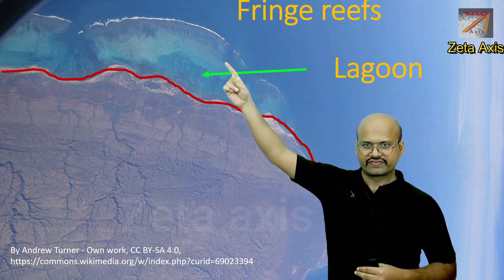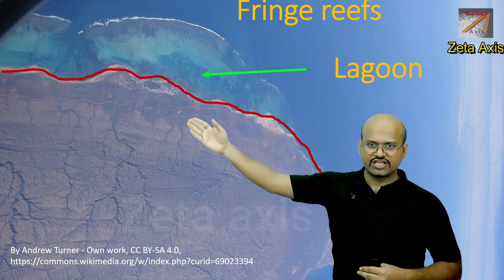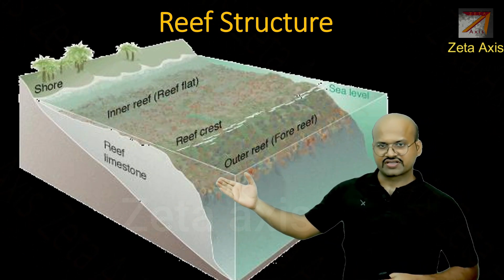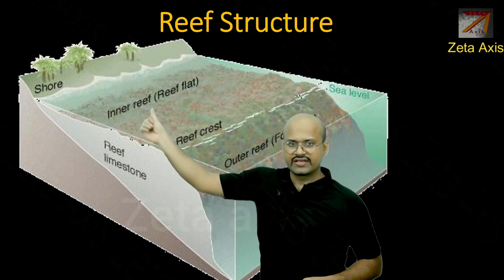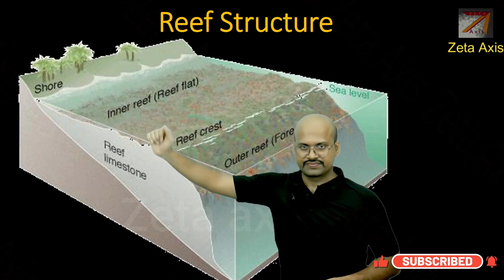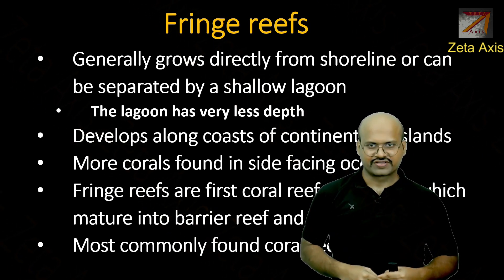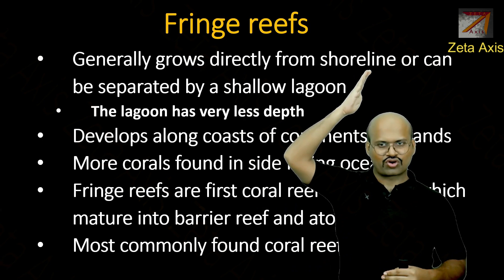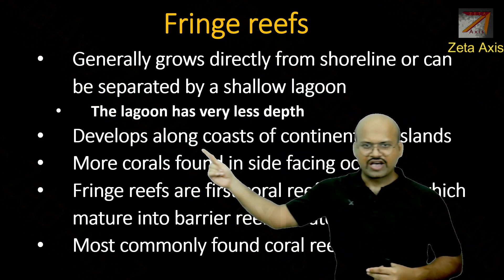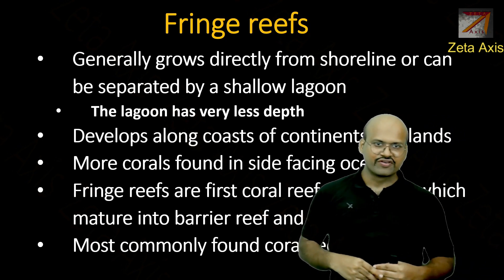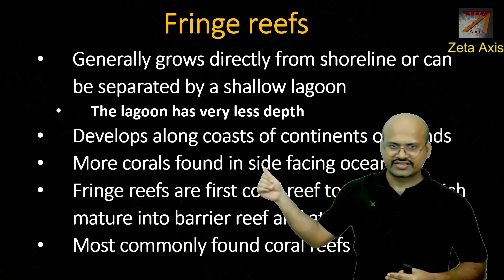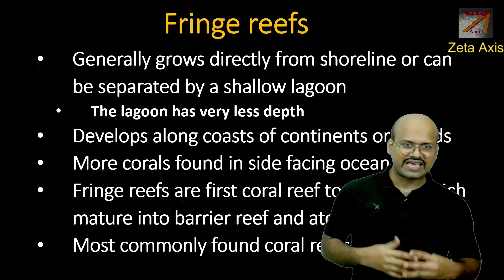Here is a mature fringe reef — we can see there is a very small lagoon between the reef and the coastline. Looking at the reef structure, the coastline is here and the crest of the reef is just beside it. Fringe reefs generally grow directly from the shoreline or are separated by a very shallow lagoon with very little depth. They develop along the coast of continents or islands, and more corals are concentrated on the side facing the ocean because of active currents there.